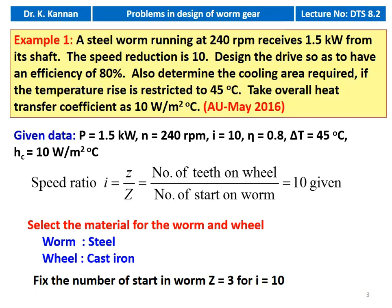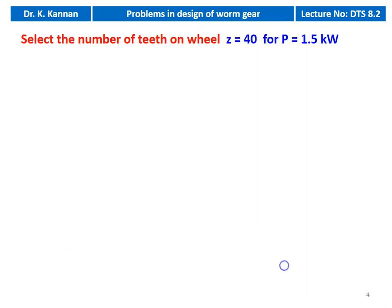For higher speed reduction, the number of starts will decrease. Then we select the number of teeth on the wheel: small z = 40 for power of 1.5 kilowatt. For lower power we take 40 teeth; for higher power we can take 50 to 70 teeth.